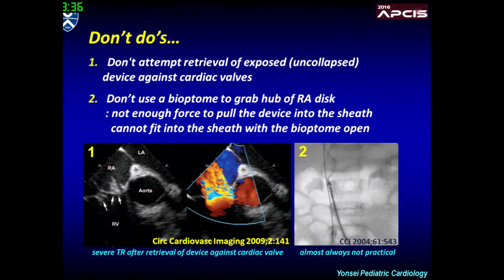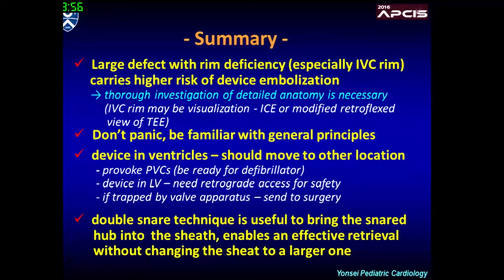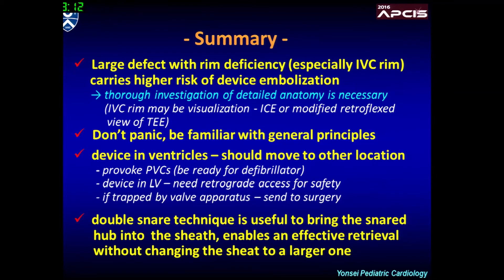There are a few case reports in which the snared device was pulled back from the right ventricle or even from the pulmonary artery to the RA or IVC. However, I would like to emphasize that pulling back an uncollapsed device against cardiac valves may cause serious valve damage. In summary, a large defect with rim deficiency, especially in the IVC rim, carries a higher risk of device embolization. In case of device embolization, don't panic — be prepared and familiar with the general principles. The double-snare technique enables effective retrieval of an embolized device without changing the sheath to a larger one.